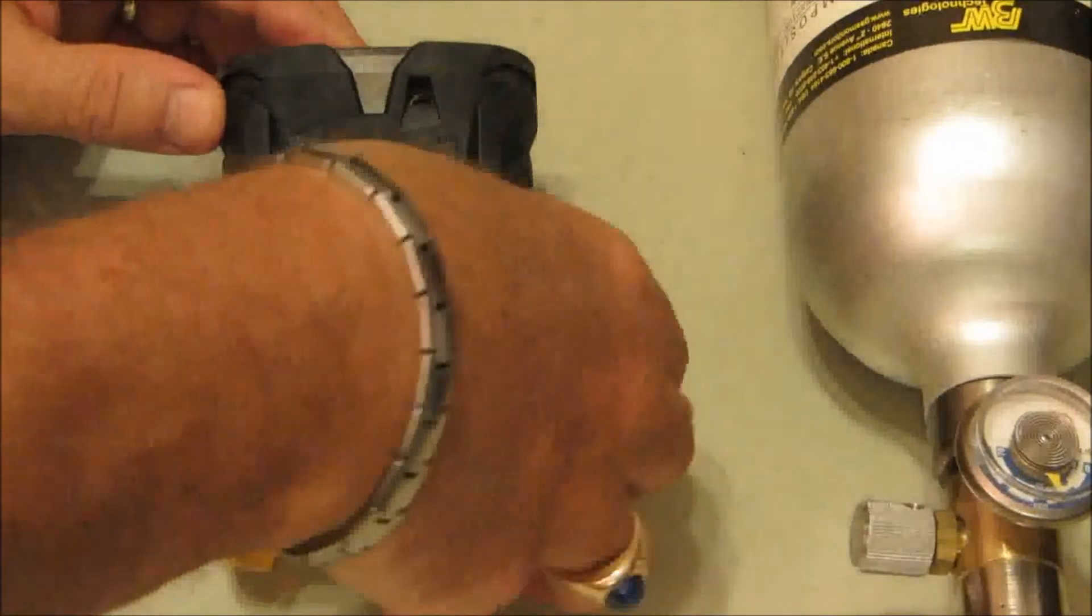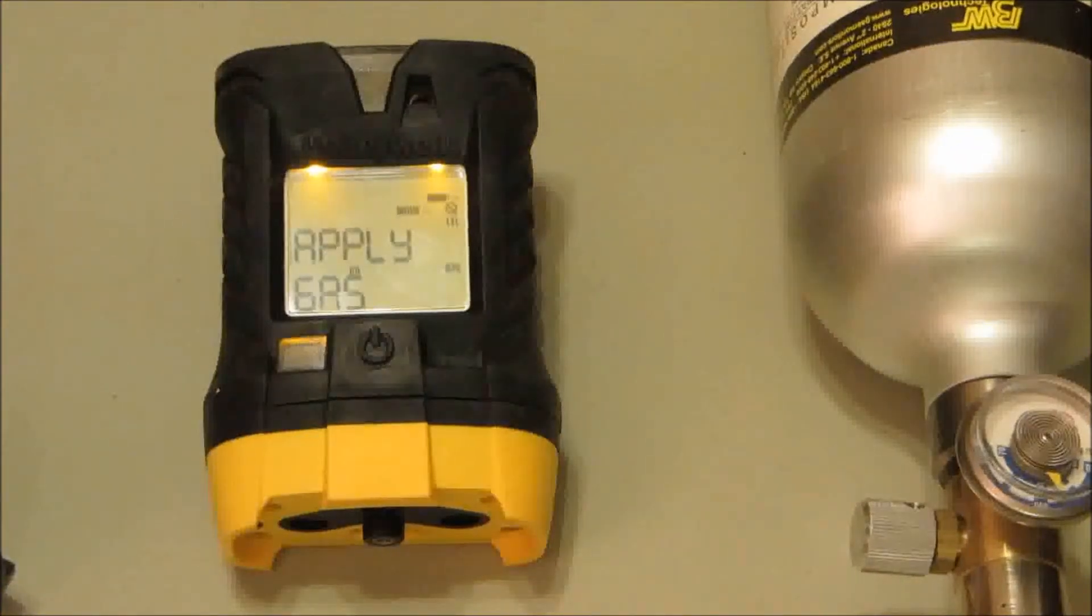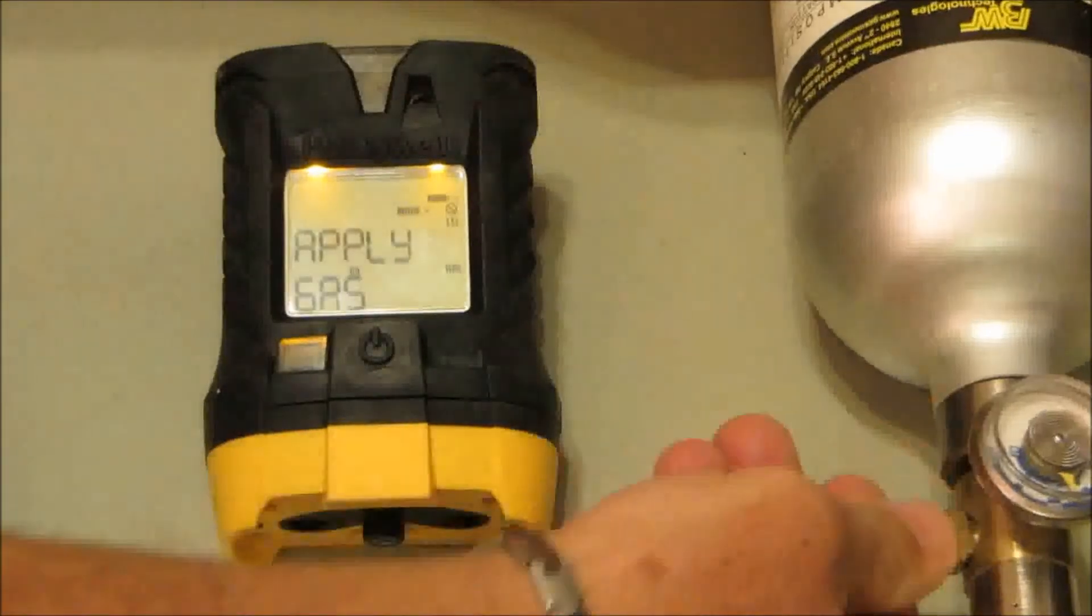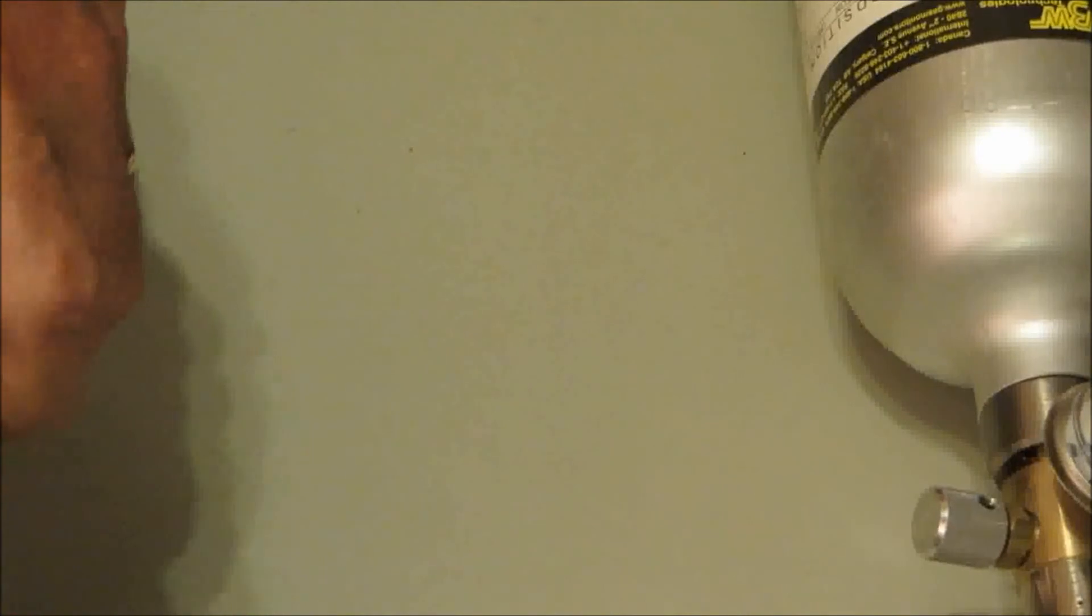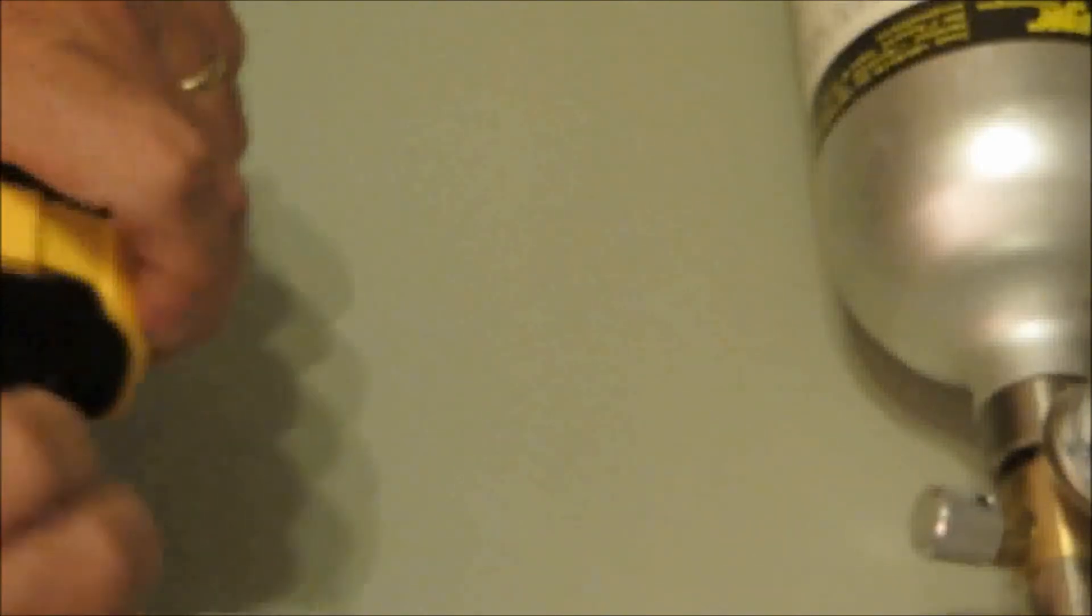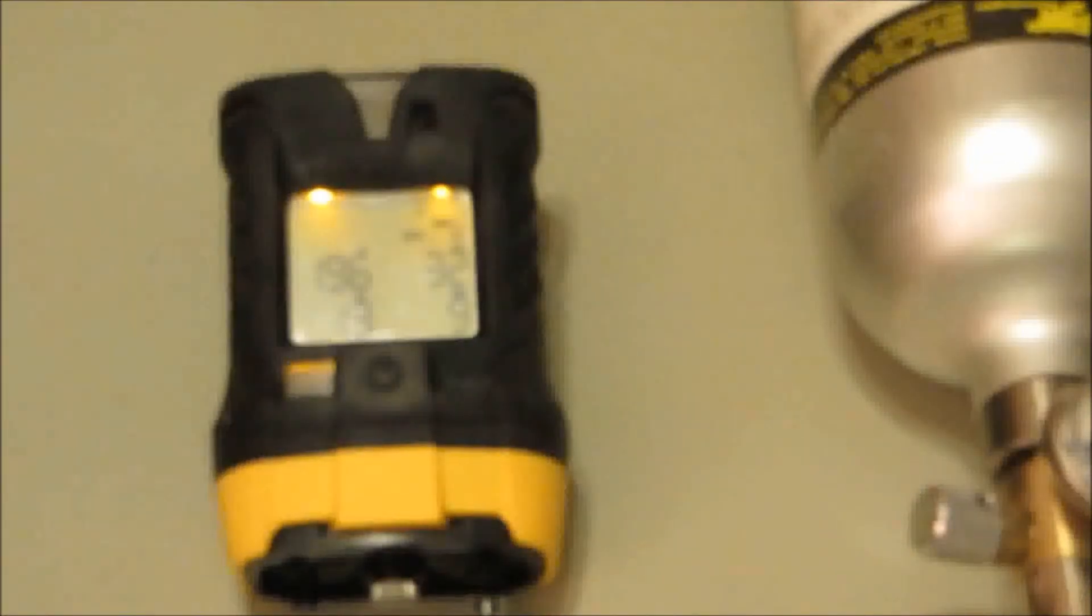Press the button again when it counts down before it hits zero and then apply gas by attaching the calibration adapter with the thumb screw to the bottom of the unit.